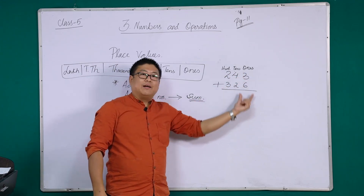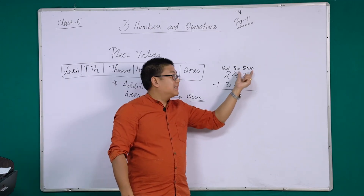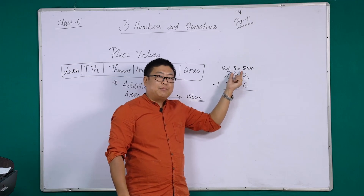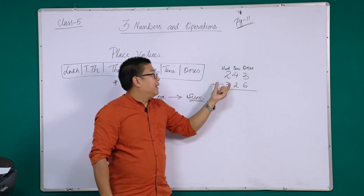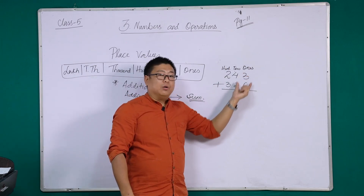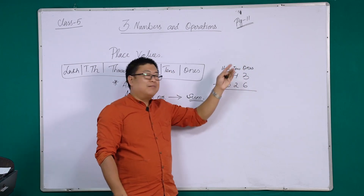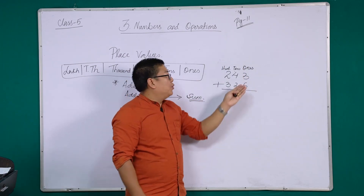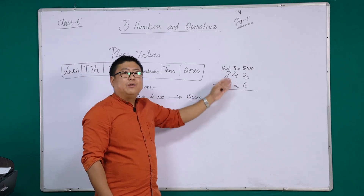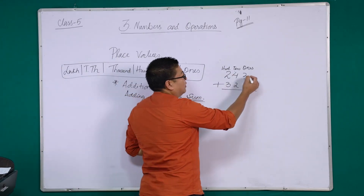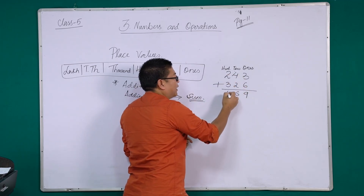Column means a vertical line, a straight line. Though the numbers may be different, they should be in one column. So three and six are in one's place, four and two are in tens place, two and three are in hundreds place. After you have arranged and placed them in this manner, you simply have to do addition. Three plus six is nine, four plus two is six, two plus three is five.